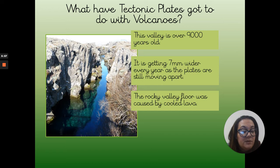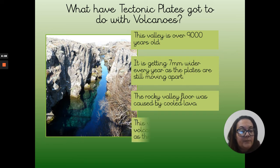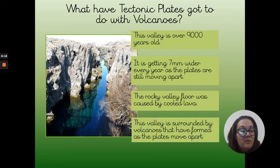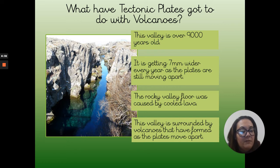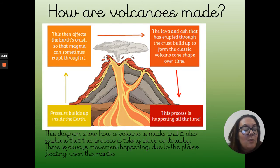The rocky valley floor was caused by cooled lava, so that means lava has come up through the surface and has then cooled down again, creating a rocky bed, a rocky floor. This valley is surrounded by volcanoes that have formed as the plates have moved apart, because the mantle layer is liquid magma, and we know that's what comes out through the top of a volcano. This is an example of a real place where volcanic activity is occurring all of the time.